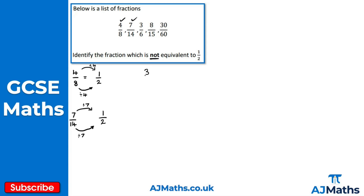We've got 3 over 6. Again, I can divide both the numerator and denominator by 3. So 3 divided by 3 gives me 1, and 6 divided by 3 gives me 2. So 3 over 6 is equivalent to 1 over 2, so that's fine as well.